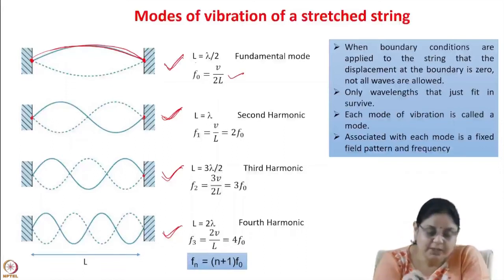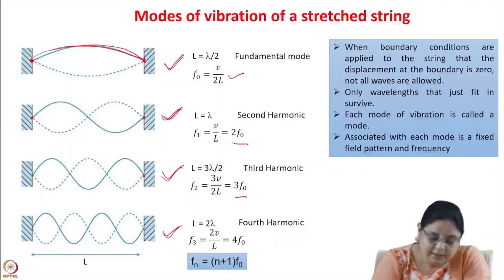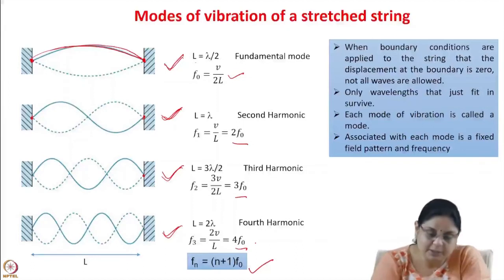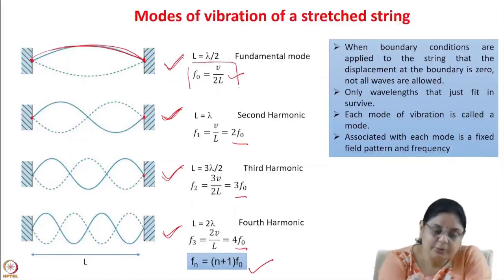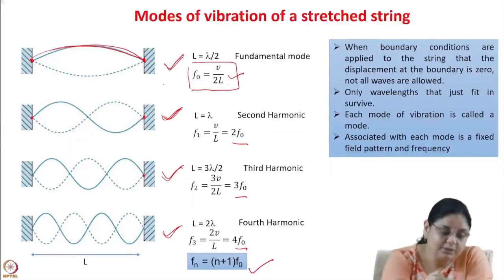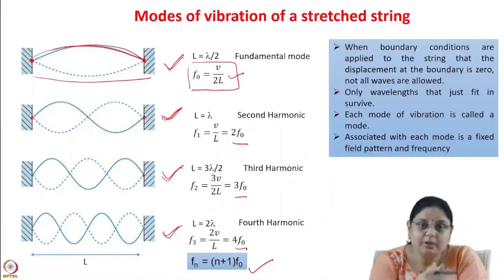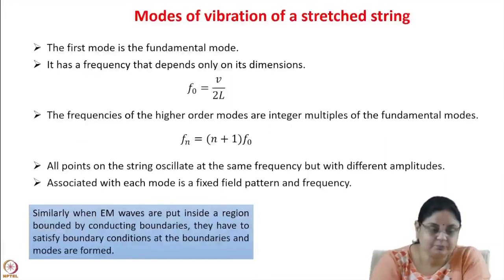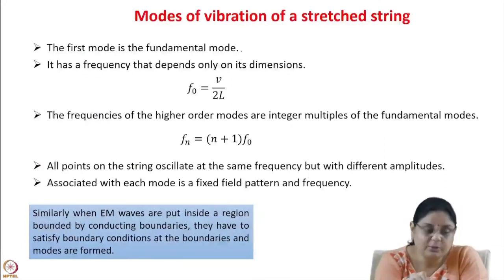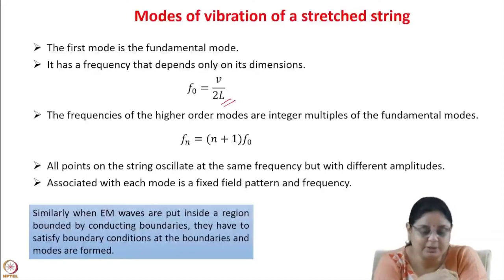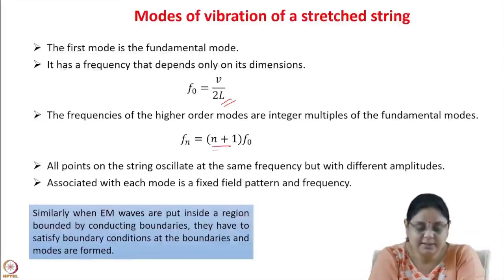The fundamental mode frequency depends upon the dimensions of the system (here the length L). The frequencies of higher-order modes are integral multiples of the fundamental mode. All points on the string oscillate at the same frequency but at different amplitudes. Associated with each mode is a fixed field pattern and a fixed frequency. Applying boundaries has turned the travelling wave into a standing wave, and in the direction where boundaries are applied only certain discrete wavelengths are allowed.